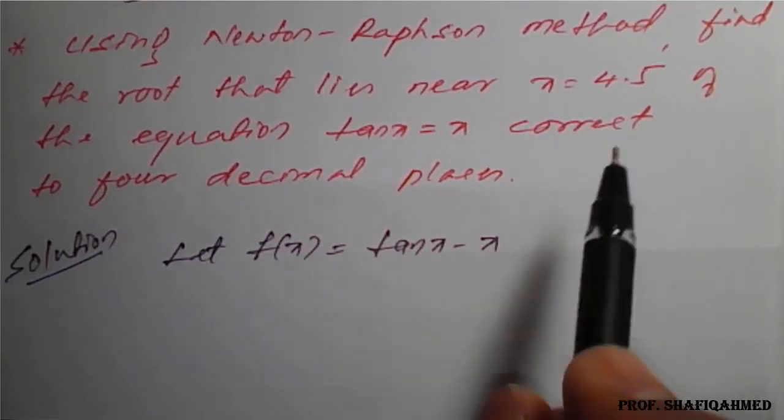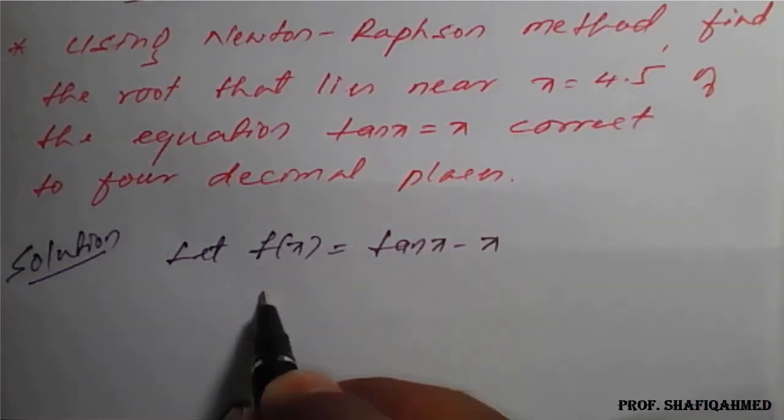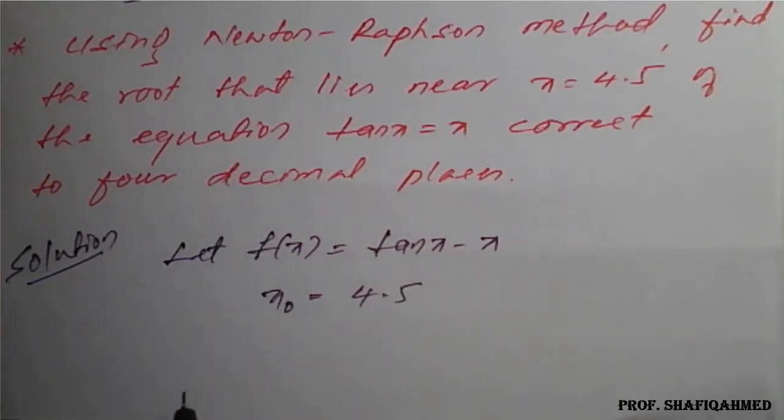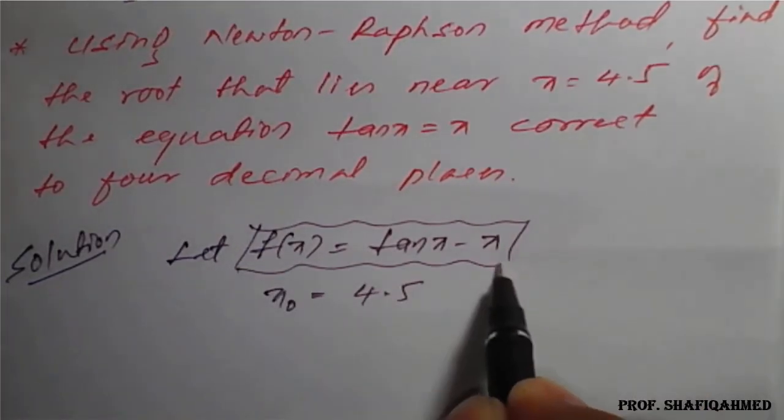Once we get this, they have given in the question x equals 4.5, which is the x naught value. So x naught is 4.5. Then we will go for the function differentiation.